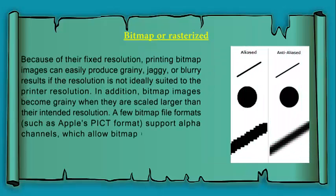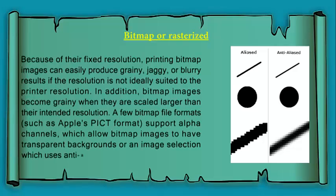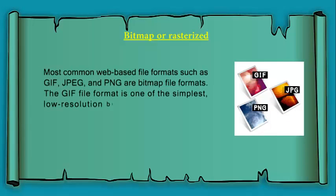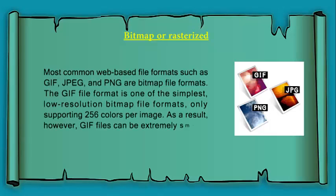A few bitmap file formats, such as Apple's PICT format, support alpha channels, which allow bitmap images to have transparent backgrounds or image selections which use anti-aliasing. Most common web-based file formats such as GIF, JPEG, and PNG are bitmap file formats. The GIF file format is one of the simplest, low-resolution bitmap file formats, only supporting 256 colors per image.